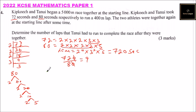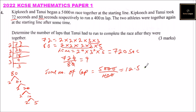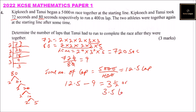So total number of laps — they were running 5,000 meters and a lap is 400 meters. So 5,000 divided by 400 is 12.5 laps. Because Tanui, by the time they were together, had run 9 laps, you subtract: 12.5 laps minus 9 is equal to 3.5 laps. So that is what Tanui had to run after they were together — 3.5 laps.